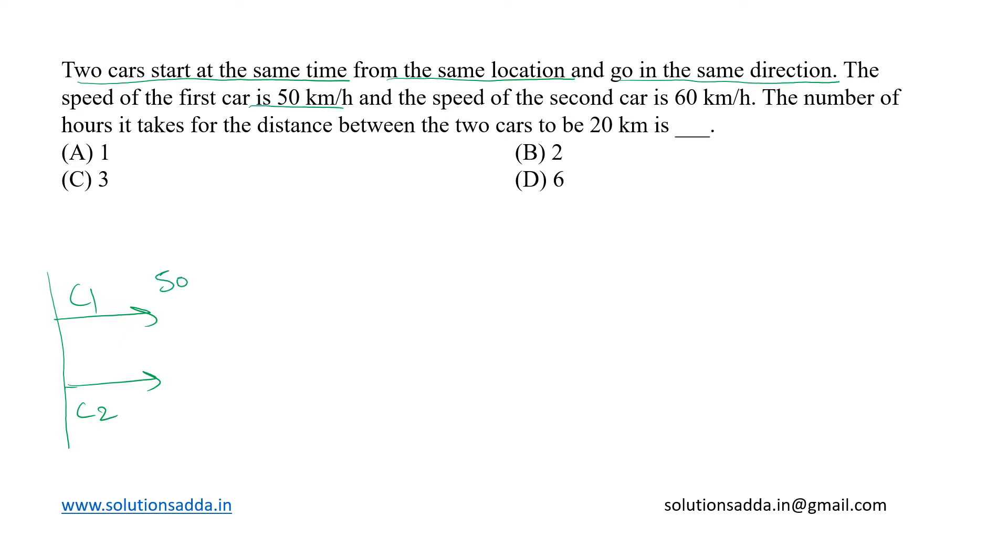So speed of C1 will be 50 kilometer per hour and the speed of second car is 60 kmph. Now they are asking for the number of hours it takes for the distance between the two cars to be 20 kilometers.